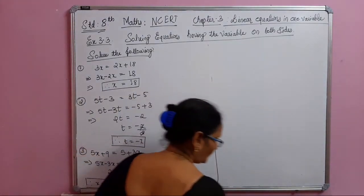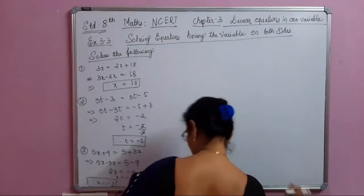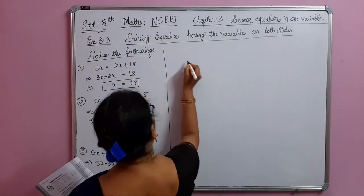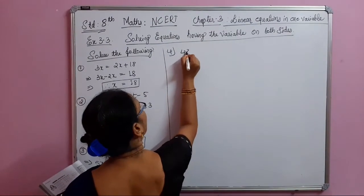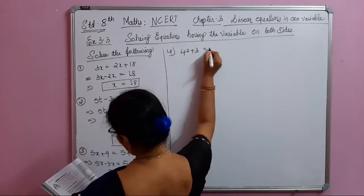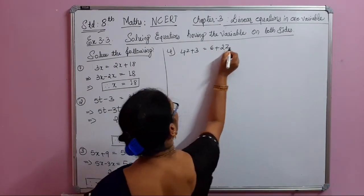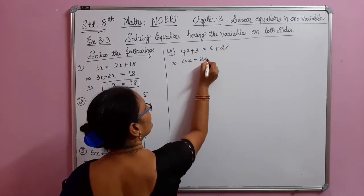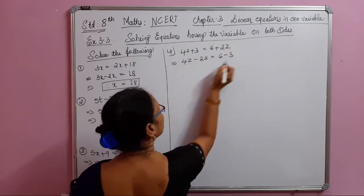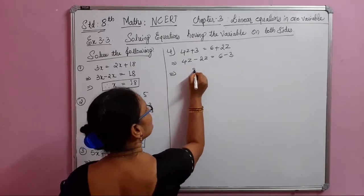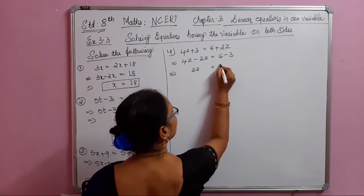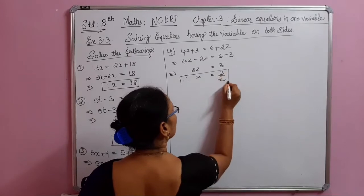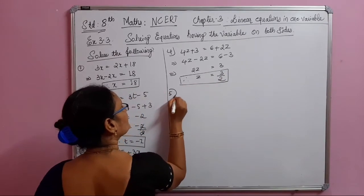The fourth problem is 4z plus 3 equals 6 plus 2z. Using transposing: 4z minus 2z equals 6 minus 3. So 2z equals 3, therefore z equals 3 divided by 2.